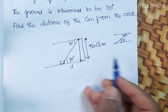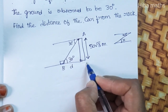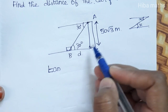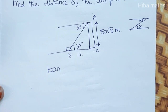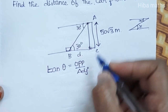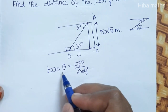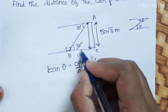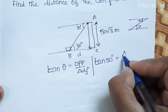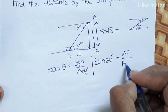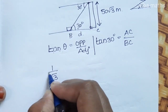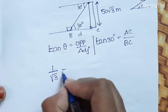Now we label the diagram A, B, C. We can mark it. Now we have tan theta — opposite by adjacent. Tan theta is 30 degrees, so this angle is 30 degrees. The opposite side is AC and the adjacent distance is BC.